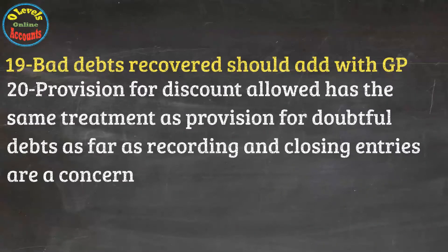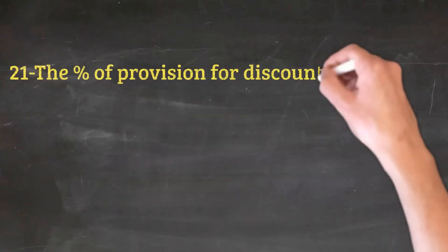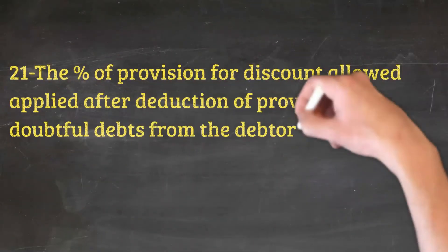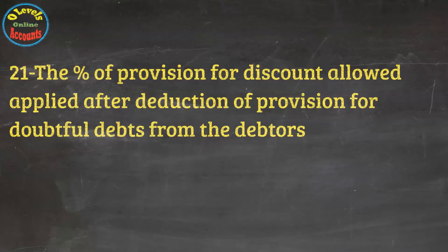Provision for discount allowed has the same procedure as provision for doubtful debts. The percentage of provision for discount allowed is applied after deducting the doubtful debt amount from the debtors.